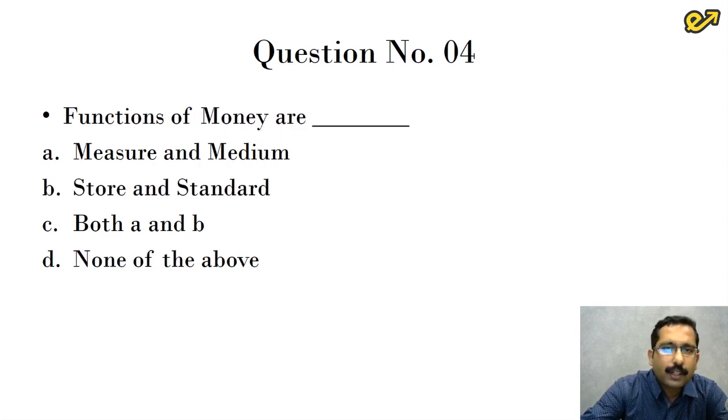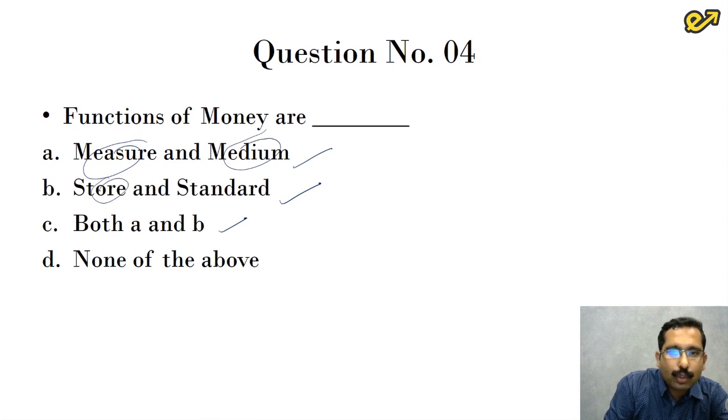Next question, functions of money are measure and medium, second option is store and standard, both a and b. So money is a measure of value, money is the medium of exchange, money is store of value, money is a standard for measurement. So all these are functions of money hence the answer is option C which is both a and b.